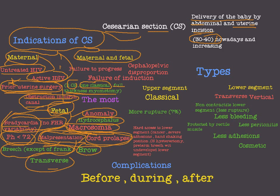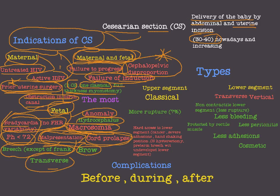Moving to combined maternal and fetal indications: failure to progress with normal vaginal delivery, and failure of induction of labour — both lead us to caesarean section. The most important combined indication is cephalopelvic disproportion — when the pelvis is too small for the baby, or the baby is too large for the pelvis. For any reason causing cephalopelvic disproportion, we move to caesarean section. Remember: maternal, fetal, and maternal-fetal indications.